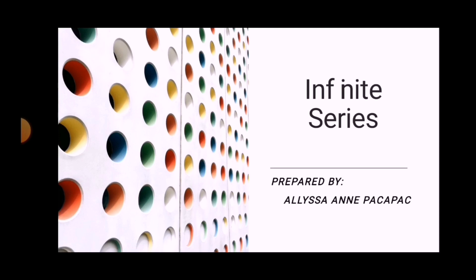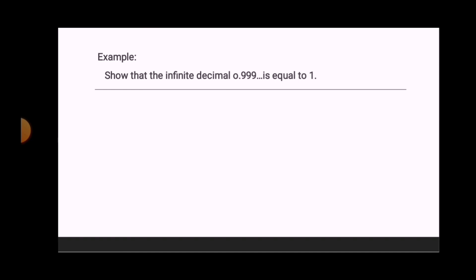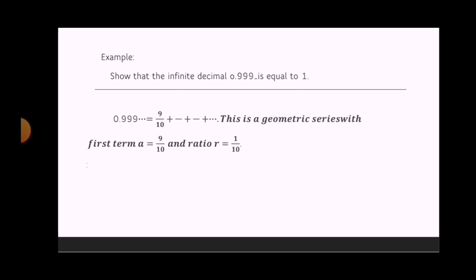Hi guys, for today's video we will discuss infinite series. For example, show that the infinite decimal 0.999... is equal to 1. 0.999... is equal to 9 over 10 plus 9 over 100 plus 9 over 1000. This is a geometric series with first term a equal to 9 over 10.